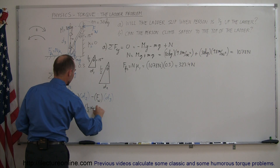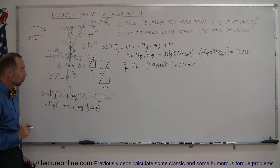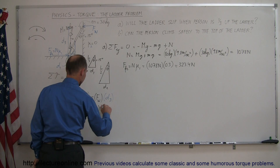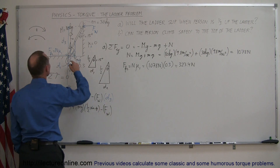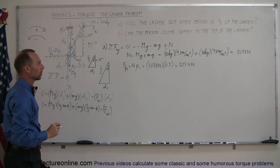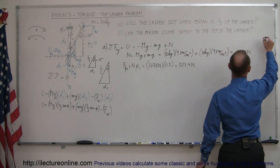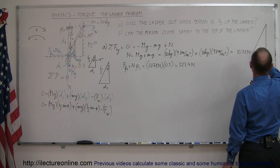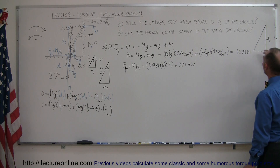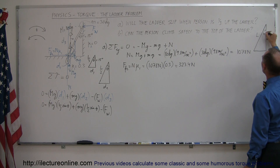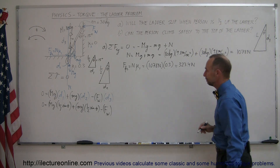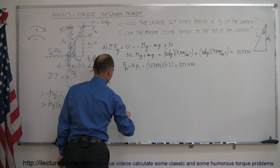Now we've found D1 and D2. For D3 — minus the force of the wall times D3 — that's the distance corresponding to the full length of the ladder. In that triangle, D3 is adjacent to the angle theta, so D3 equals L times the cosine of theta. So we have all three distances: D1, D2, and D3.